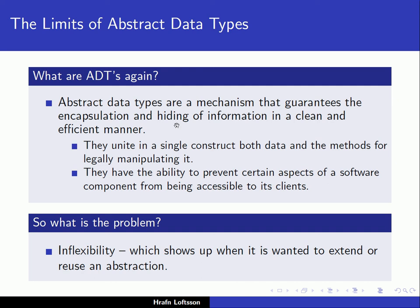The second concept was information hiding. By using information hiding we prevent certain aspects of a software component from being accessible to its clients. That's one of the important things regarding abstract data types: we're able to separate the interface from the implementation, hiding the implementation details from the clients. So aren't abstract data types just perfect?